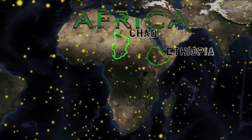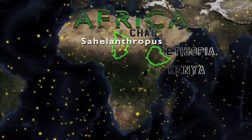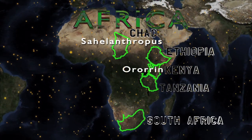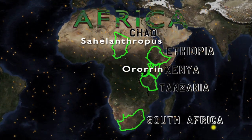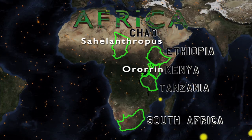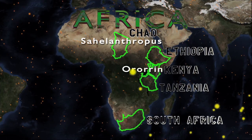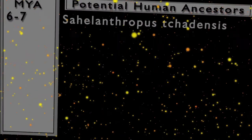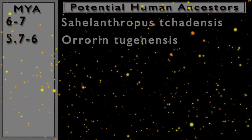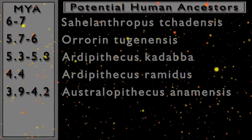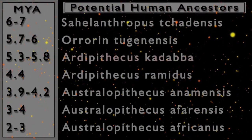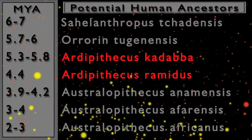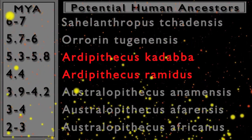In Chapter 2, we looked at Sahelanthropus tchadensis in Chad and Orrorin tugenensis in Kenya. We will now turn our attention to Ethiopia with a look at the genus Ardipithecus. Ardipithecus will take us from the late Miocene into the Pliocene epoch at 5.8 to 5.3 million years in the past.